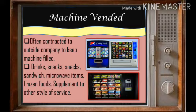Machine vended service is often contracted to an outside company to keep machines filled. These vending machines commonly sell foods like chips and candy and drinks like bottled water, juice, and soda. Typically you insert coins, a bill, or a credit card into the machine, punch some buttons, and your selection drops from a compartment.